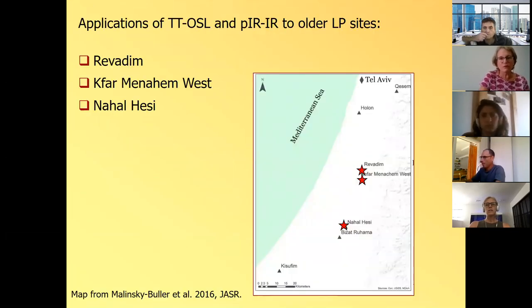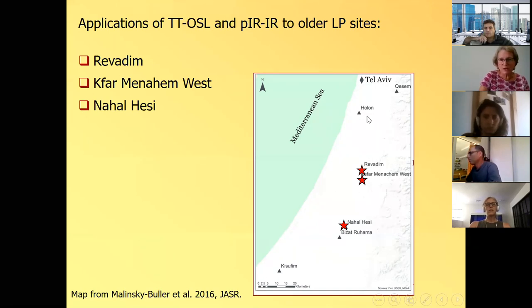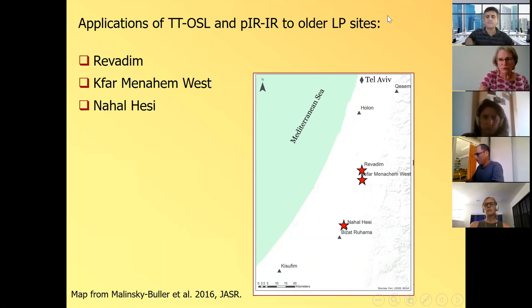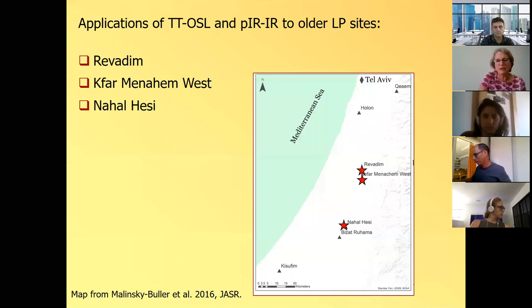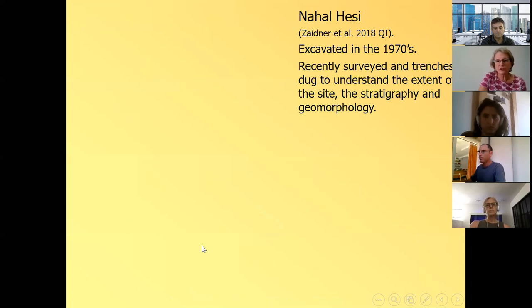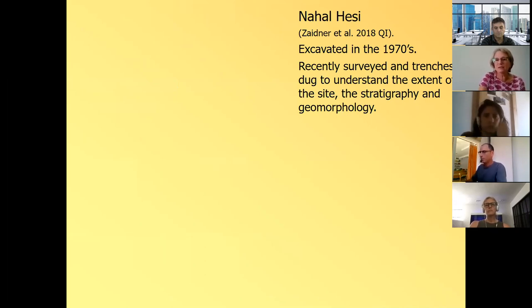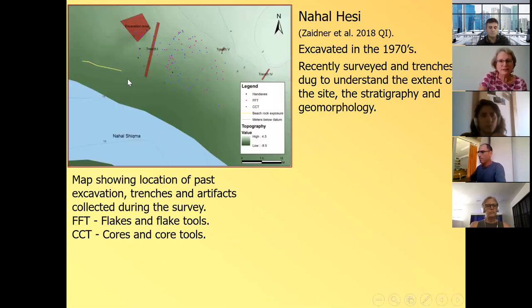So now let's go to the more heavier stuff and more difficult to date sites. Application of TTOSL and post IRIR to older lower paleolithic sites. And I'm going to talk about three sites. Nachal Hesi, Kfar Menahem West and Revadim that are shown here on the map. Here is Tel Aviv, the coastal plain. Atlit that I talked about is much further to the north. Jerusalem is about here. So all these sites reside in what we call the inner coastal plain, on coastal aeolian sediments, sands, paleosols, calcarinites. Let's start with Hesi, which is the most southern one. It was excavated in the 1970s and recently it was surveyed and trenches dug to understand the extent of the site, the stratigraphy and geomorphology.